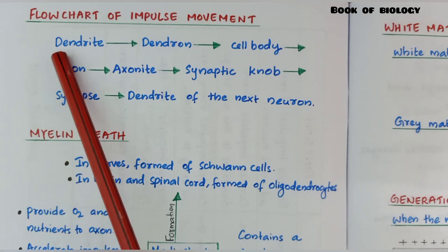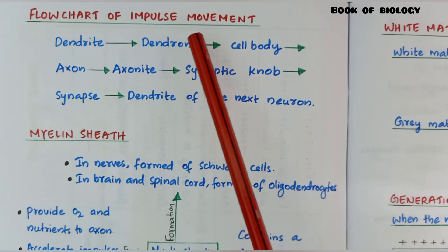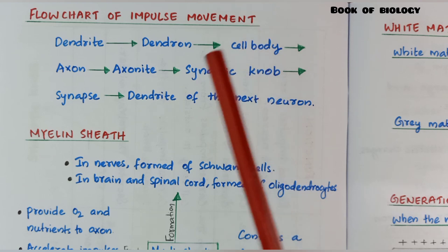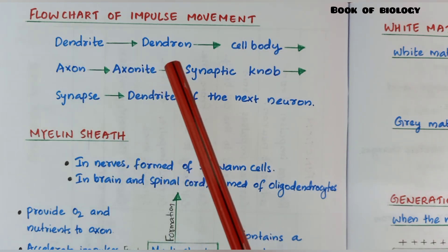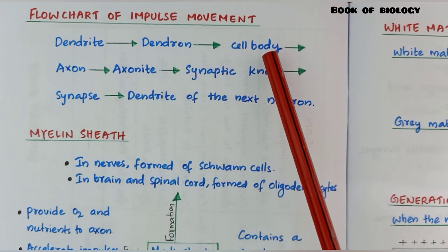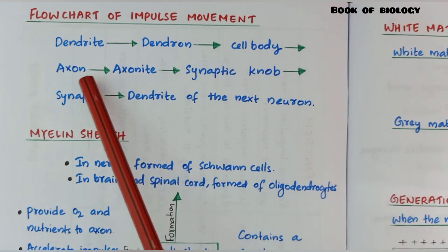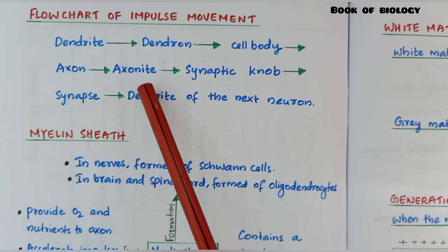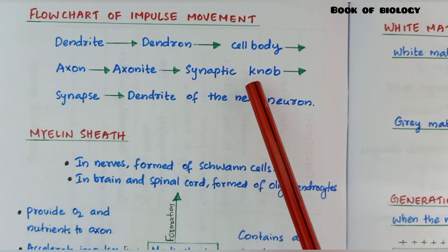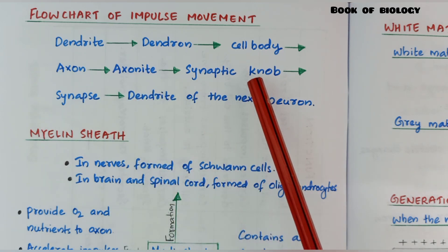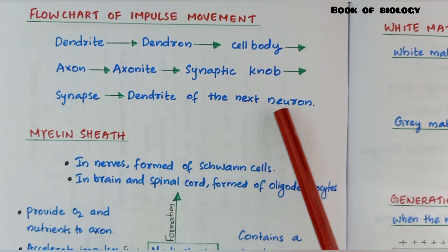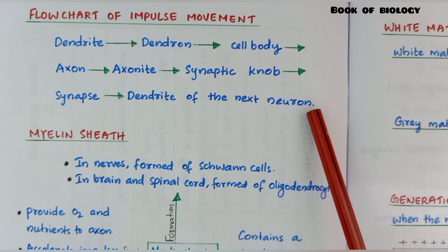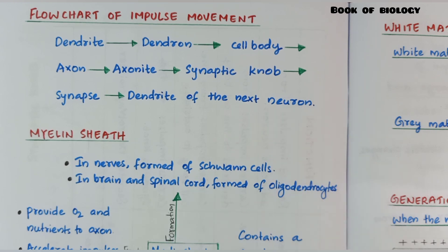Next: flow chart of impulse movement. That is: dendrite → dendron → cell body → axon → axonite → synaptic knob → synapse → dendrite of the next neuron. This is how an impulse moves.